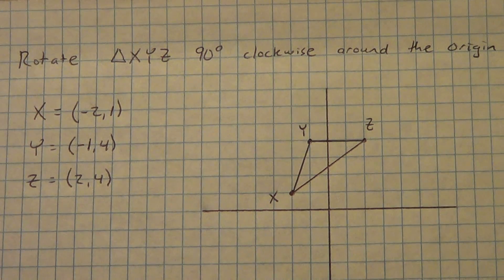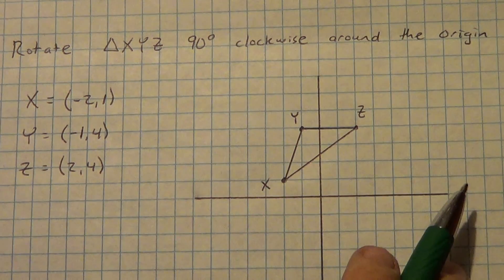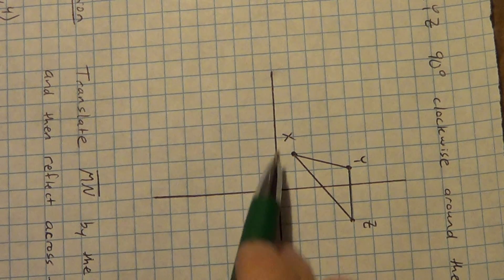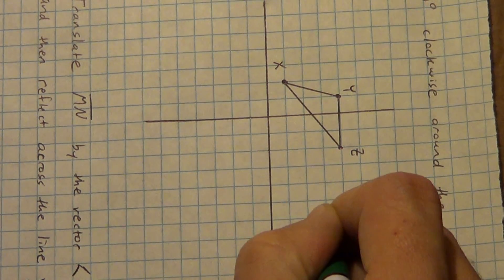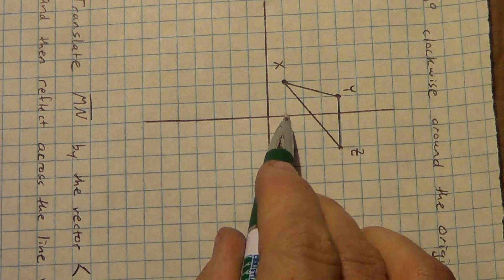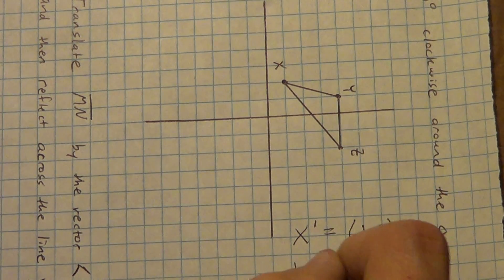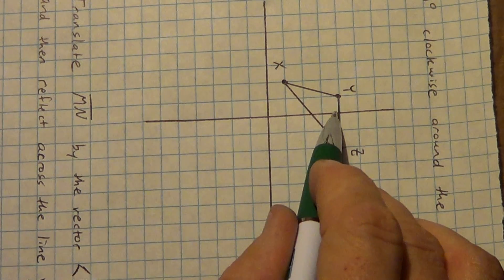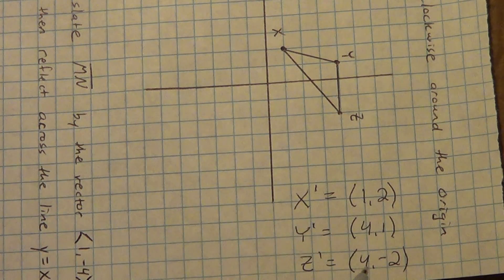All right, here we go. The easiest way to do this is to literally take your paper and rotate it 90 degrees clockwise — clockwise is the way a clock moves. I know it's 90 degrees because what was horizontal is now vertical. All I'm going to do is write down where the points are now. X prime is at (1, 2). Y prime is at (4, 1). Z prime is at (4, negative 2). After you've written all that down, just turn your paper back.